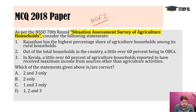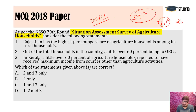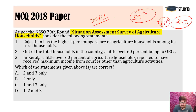NSSO is the prime agency. They did the 59th round in 2003 and updated it as the 70th round in 2013. That whole year it ran, producing the Situation Assessment Survey of Agricultural Households. There was no direct current affairs data on it, but many scholars referenced this 70th round in articles, suggestions, and problem identification, which is how this question came.